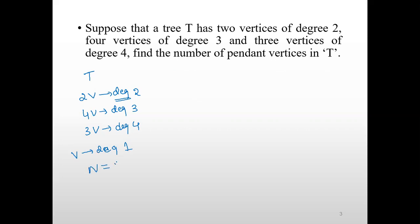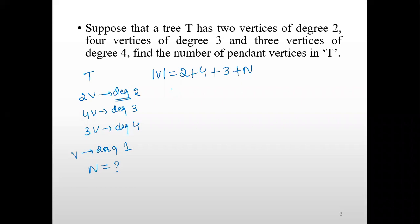We will take the number of pendant vertices as n, and n is to be found. First, let's find the total number of vertices in the given tree. The cardinality of V equals 2 vertices of degree 2, plus 4 vertices of degree 3, plus 3 vertices of degree 4, plus n pendant vertices of degree 1. So the total is 2 plus 4 plus 3 plus n, which gives n plus 9.